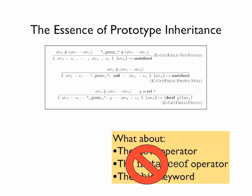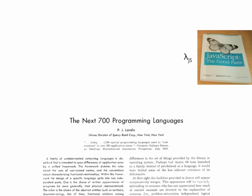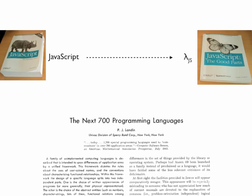Seriously, LambdaJS is a model of the essentials of JavaScript. As Landin taught us several decades ago, the rest is detail. The new operator, the instanceof operator, and all the other details of the full JavaScript language can, in principle, be desugared into LambdaJS. The thing we did is we actually implemented this desugaring function.